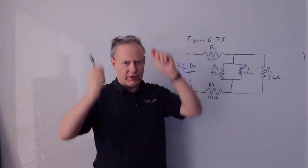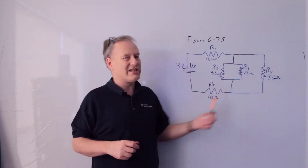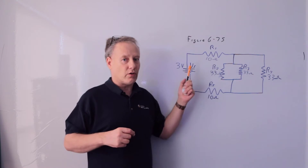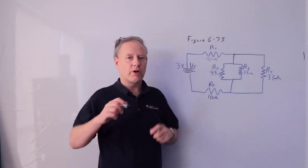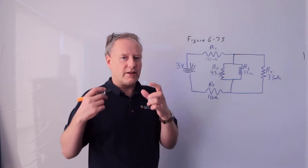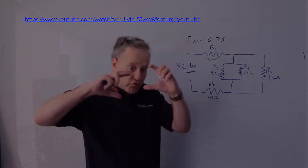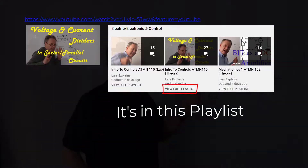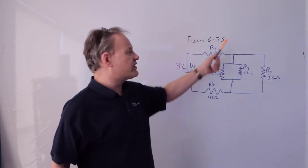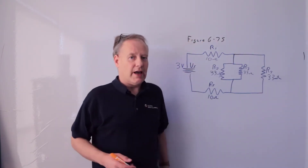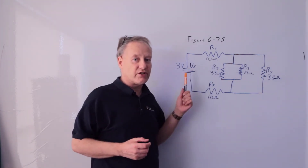Let's unpack series-parallel circuits. This is a series-parallel circuit and I'm going to unpack the resistance, the total current, the total power, and more. More specifically, we're going to unpack the voltage and current dividers in a series-parallel circuit. This is from the exam review — figure 6-75 from the textbook — and I want to unpack how to find the total resistance using resistor notation.